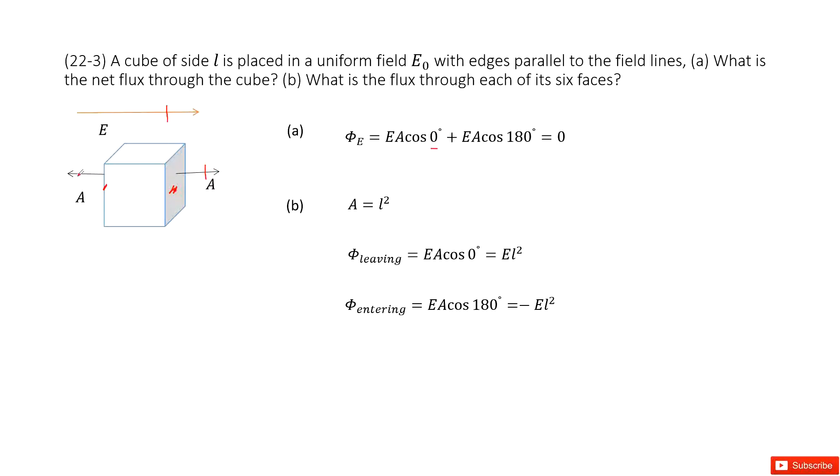Now another face. So E·A cosine θ. Theta is 180 degrees. So add these two faces together, you get it is zero.